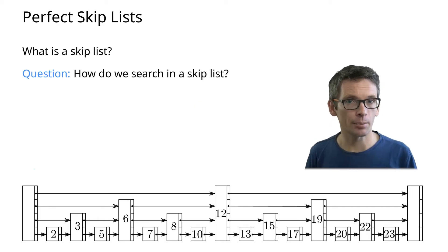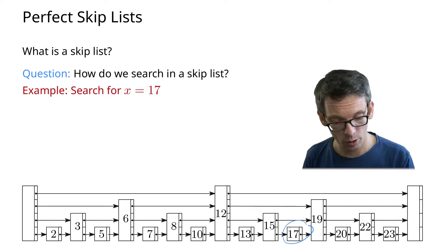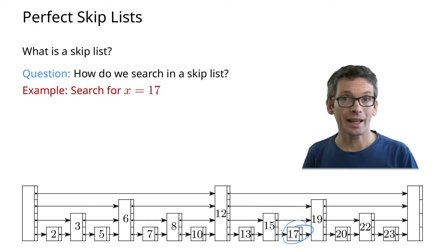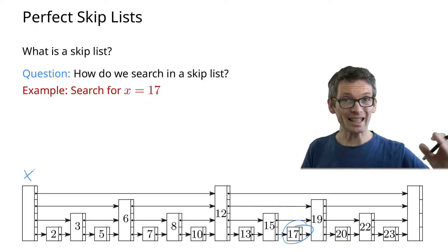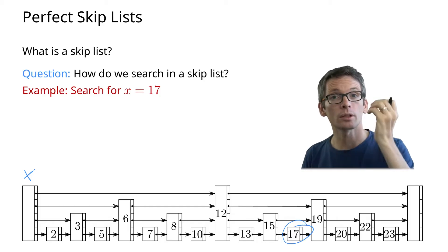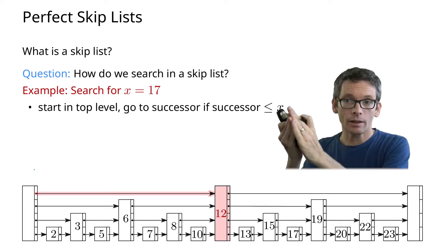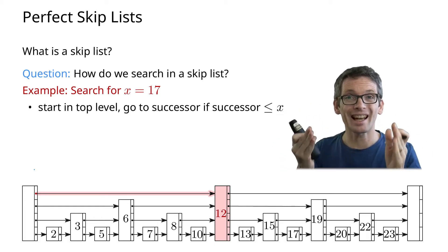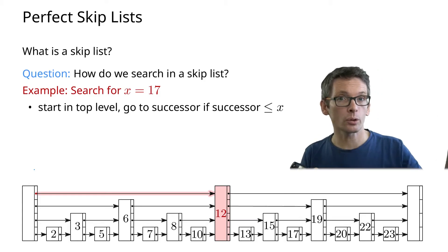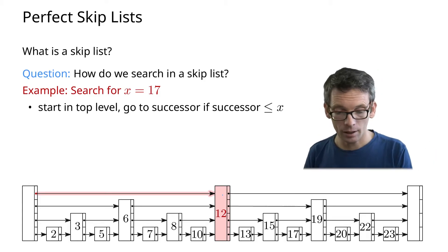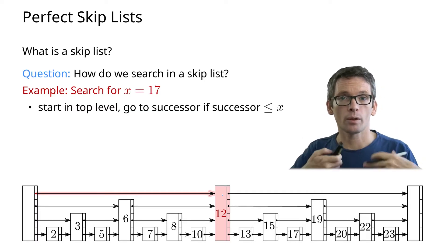And that's a perfect skip list. So how do we search in a skip list? Let's say we're searching for the 17. Just as in a linked list, we're going to start at the head. But now we want to go as fast as possible, so we're going to use the top level if possible. We start at the top level, we go to the successor as long as that successor is not larger than 17 — we don't want to go too far. The first element we see is a 12; we can safely go to the 12.